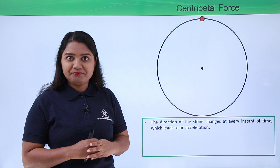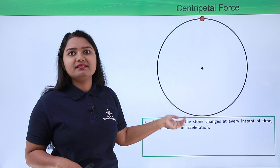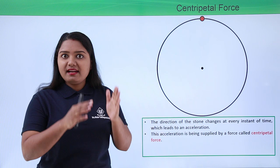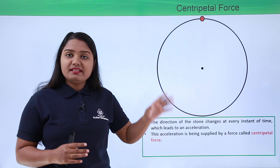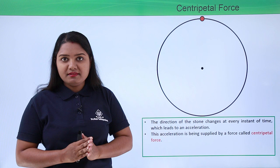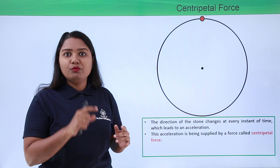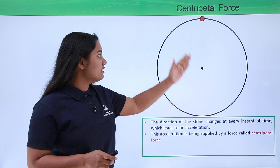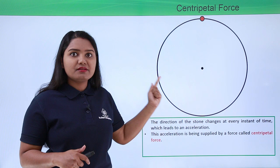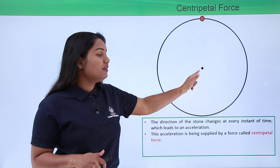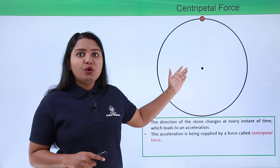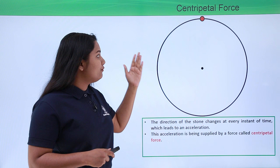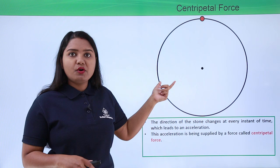The stone is constantly accelerating throughout its circular path. Since acceleration comes only from an applied force, there must be a force acting on it that keeps it rotating around the center of the circular path. This force is what we call the centripetal force — the force which keeps the body in uniform circular motion and prevents it from flying away in a straight line.